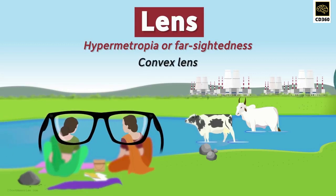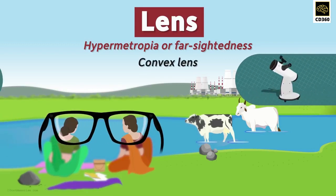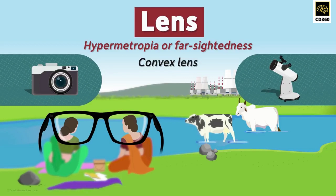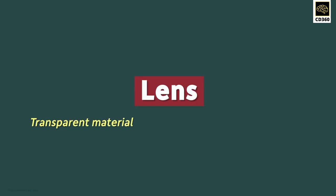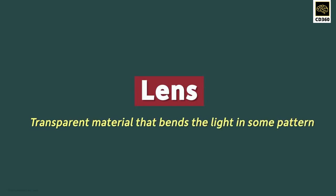Lenses are also used in telescopes and cameras. So what is a lens? In simple language, we can say that a lens is a transparent material that bends light in some pattern. The pattern in which the lens bends the light depends on what type of lens it is.